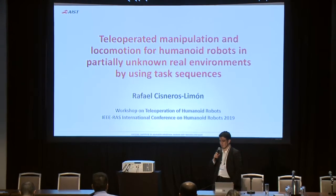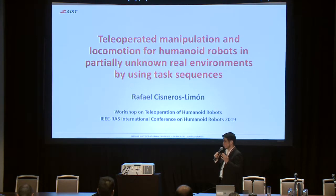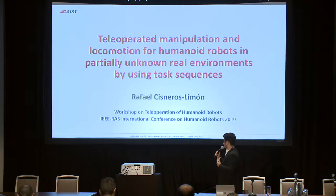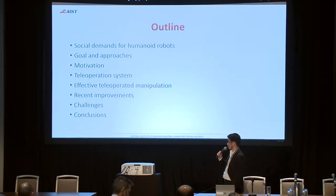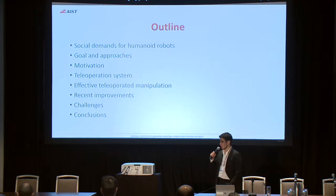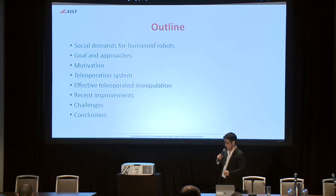I'm from the humanoid research group of AIST. Today I want to talk about the teleoperation framework we use in my group and how to deal with manipulation and locomotion for our humanoid robot, and how to use that in partially non-real environments by using what we call task sequences. The outline covers social demands, group goals, approaches to teleoperation, our motivation for entering the teleoperation framework, and our system description.